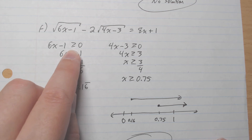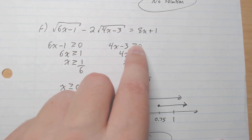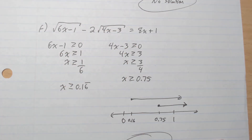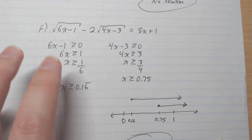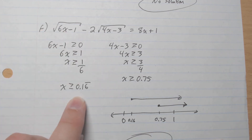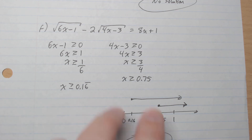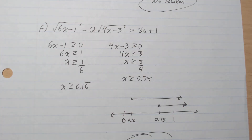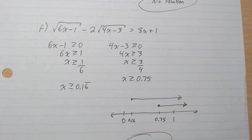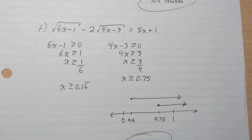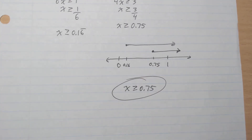For F, 6x minus 1 must be greater or equal to 0, and 4x minus 3 must be greater or equal to 0. Adding 1 and dividing by 6 gives x greater or equal to approximately 0.1̄6̄. Adding 3 and dividing by 4 gives x greater or equal to 0.75. What's in common is x greater or equal to 0.75. And that's it — it's that easy. I'll see you guys in the next video.